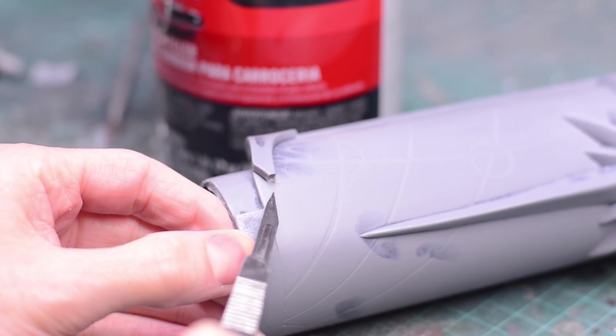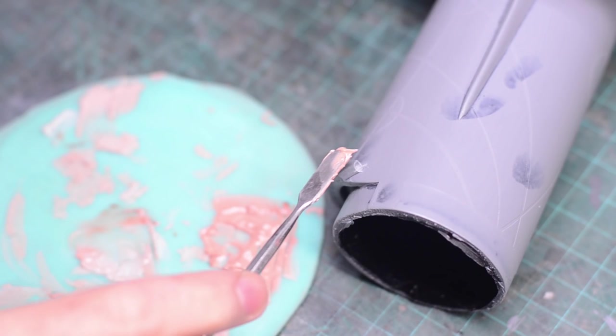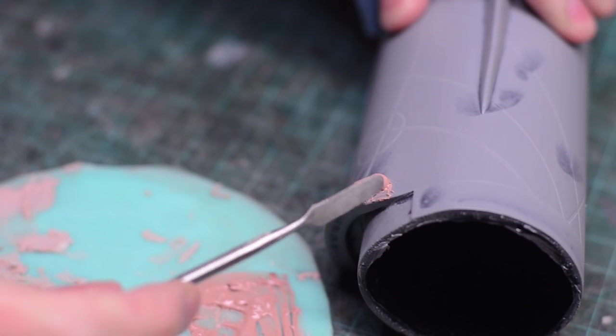Really big bubbles or missing pieces can be repaired using a catalyzed filler like bondo. You mix up your bondo with the hardener and then apply it to the afflicted area.